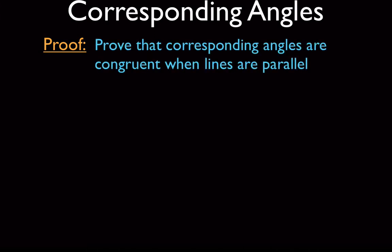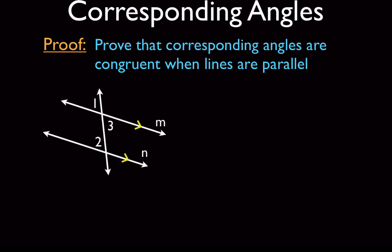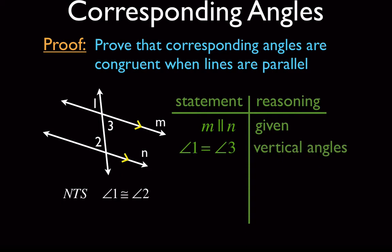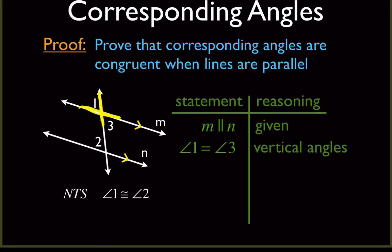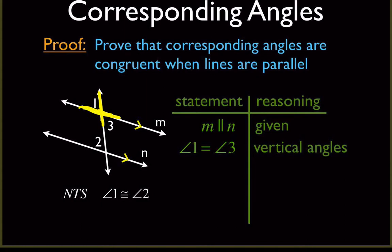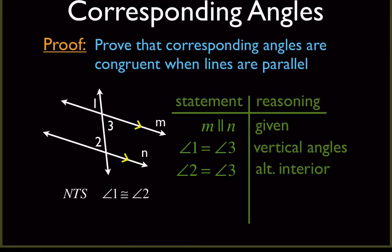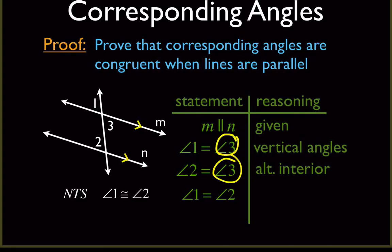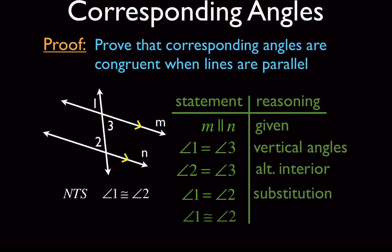To prove corresponding angles: angle 1 equals angle 3 because of vertical angles — they're across from each other forming an X. Then angle 2 equals angle 3 because of alternate interior — they're on the interior and on opposite sides of the transversal. Since both angle 1 and angle 2 equal angle 3, they must equal each other by substitution, and therefore they're congruent.